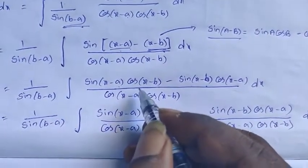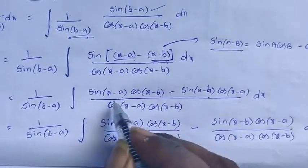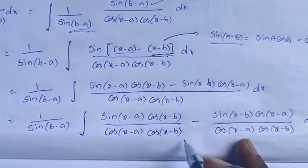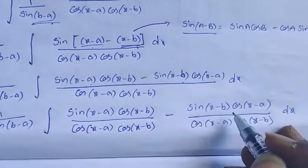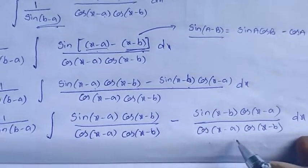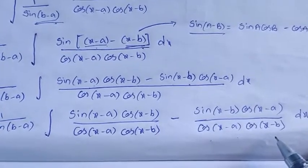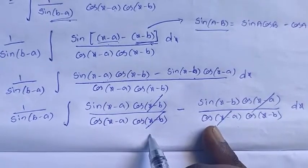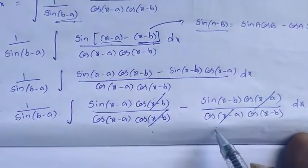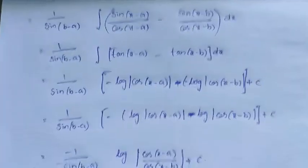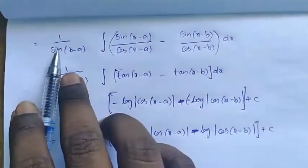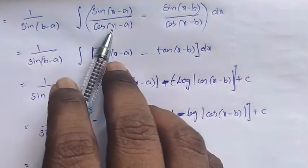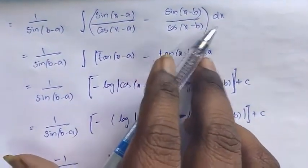Now split into parts. Sin(x minus a) into cos(x minus b) divided by cos(x minus a) into cos(x minus b) — from this, cos(x minus b) will be cancelled. And cos(x minus a) into cos(x minus a) will be cancelled. After cancellation, we get 1 by sin(b minus a), integration of sin(x minus a) by cos(x minus a) minus sin(x minus b) by cos(x minus b) dx.